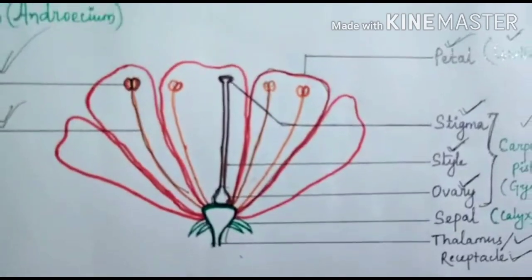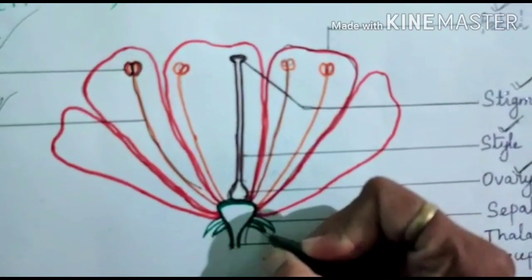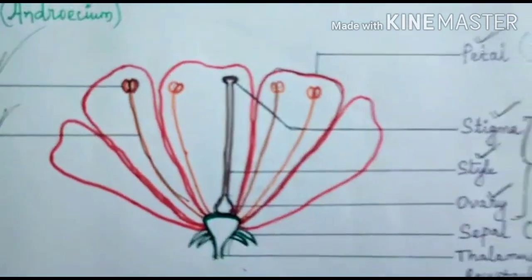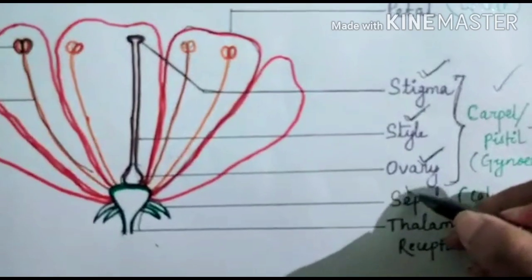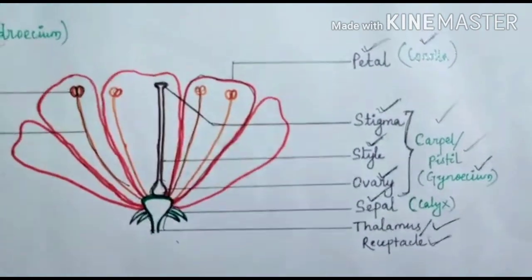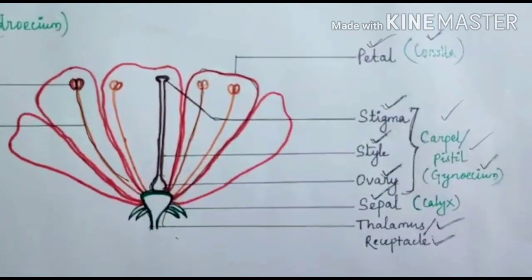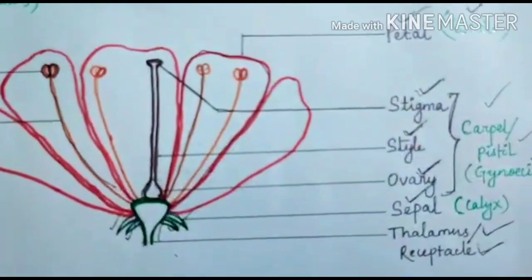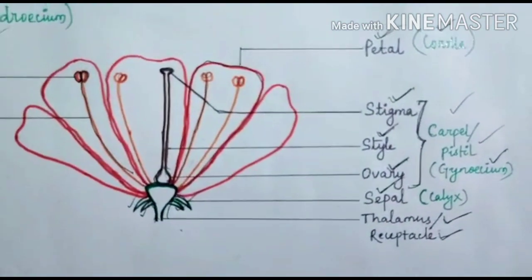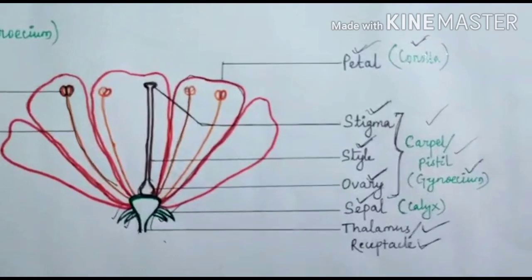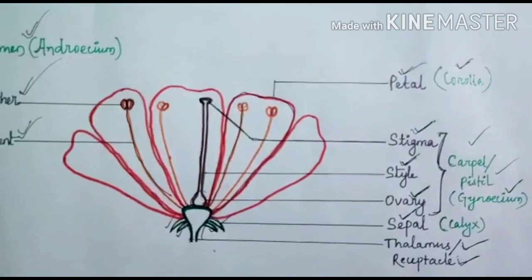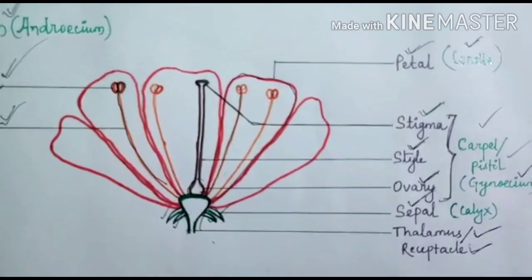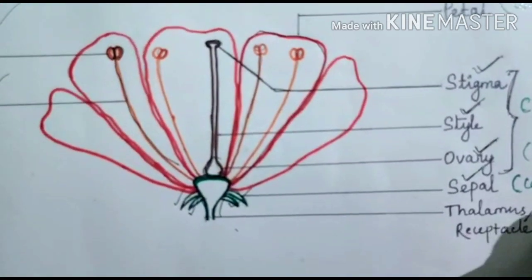Next to the corolla there is a small green-like structure called the sepal. These sepals all together form the calyx.